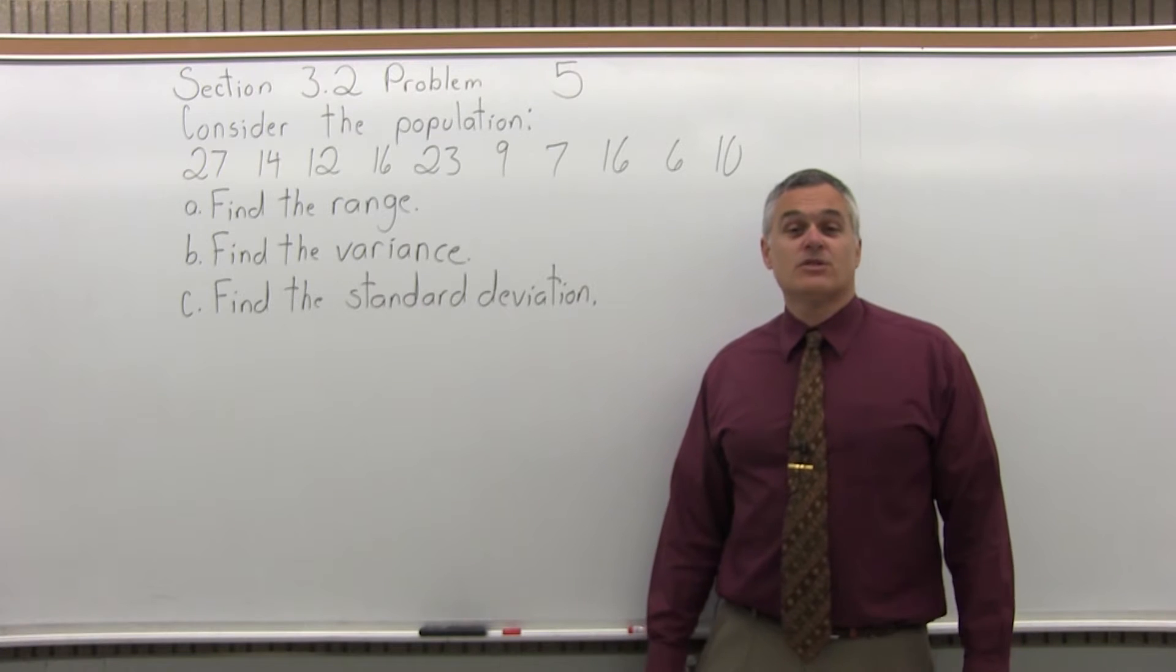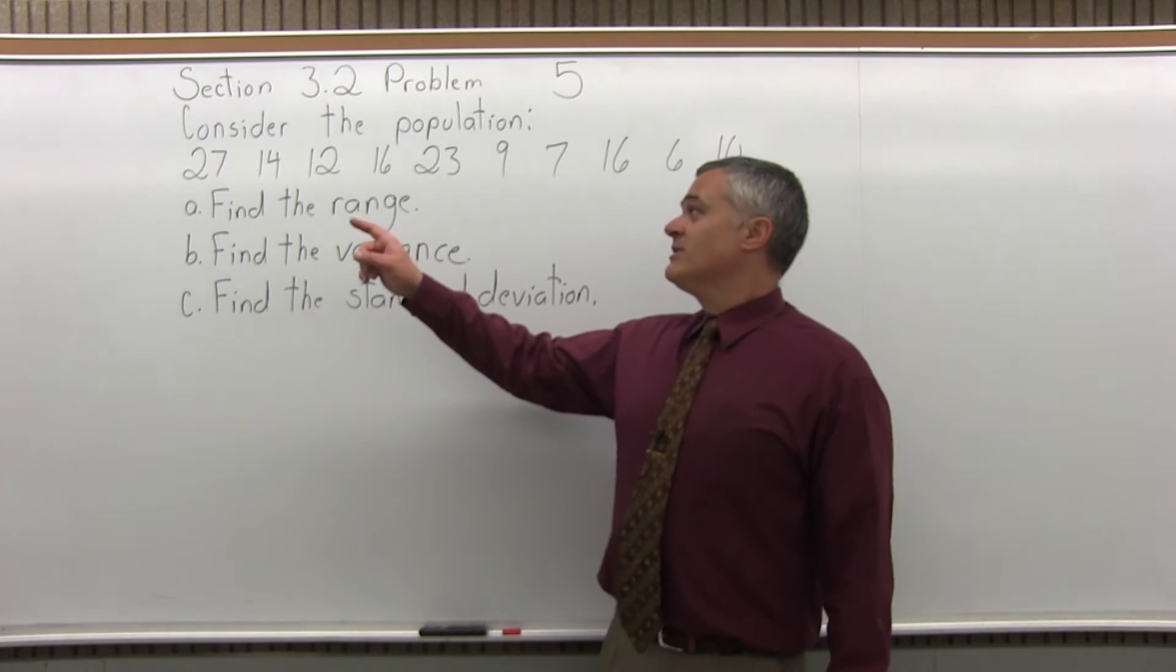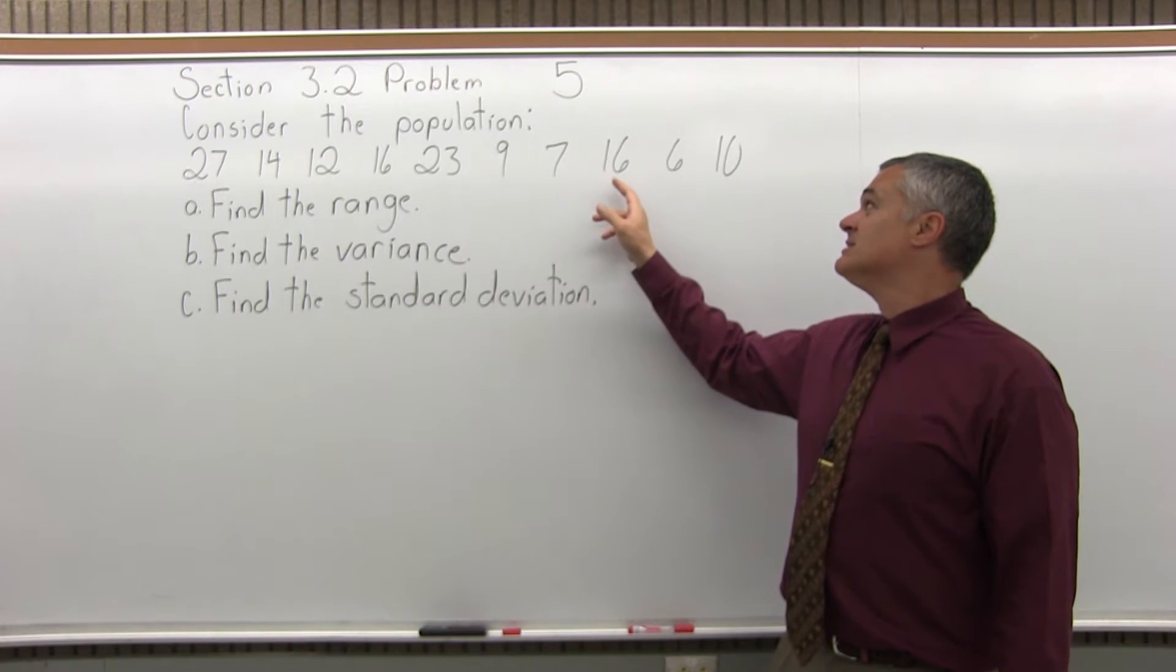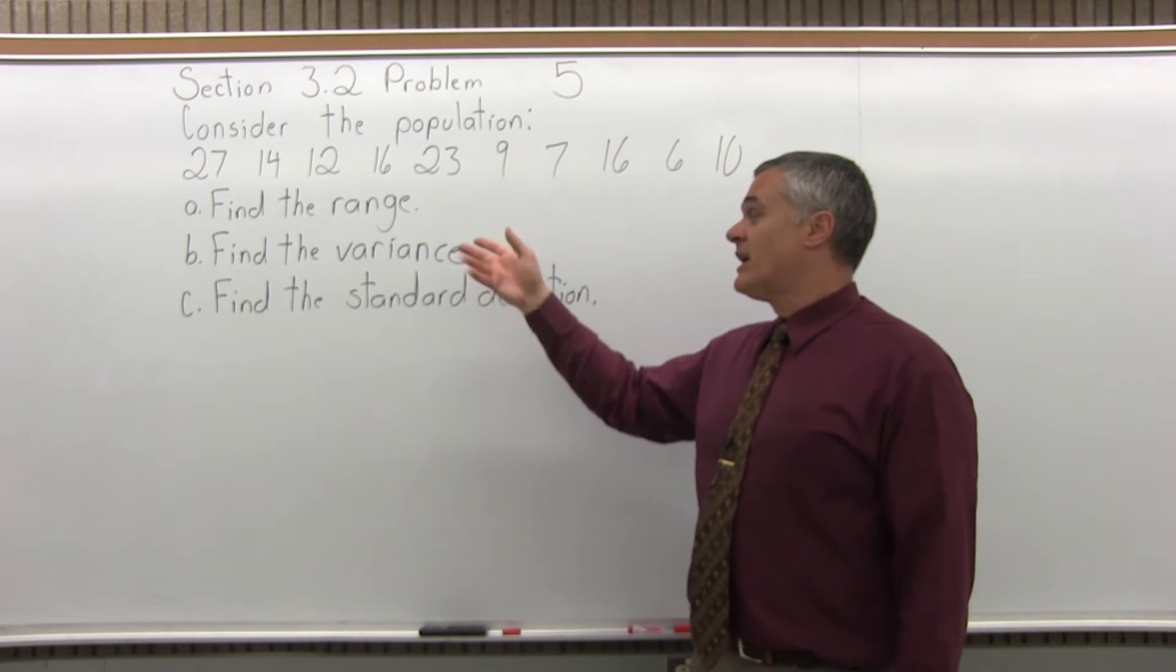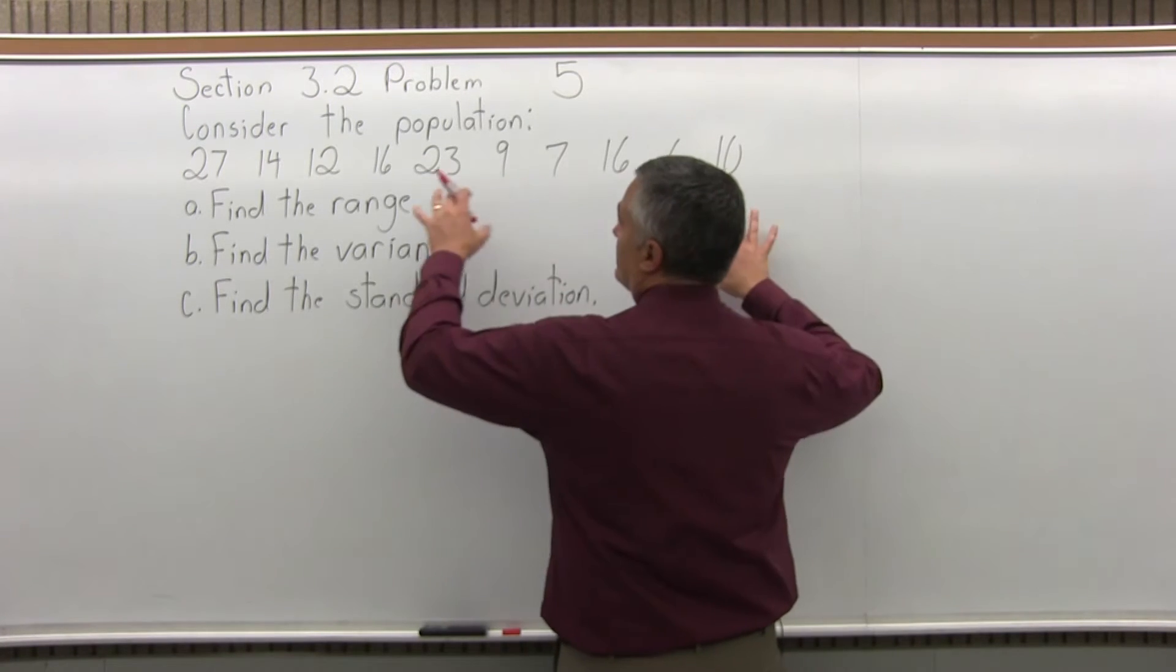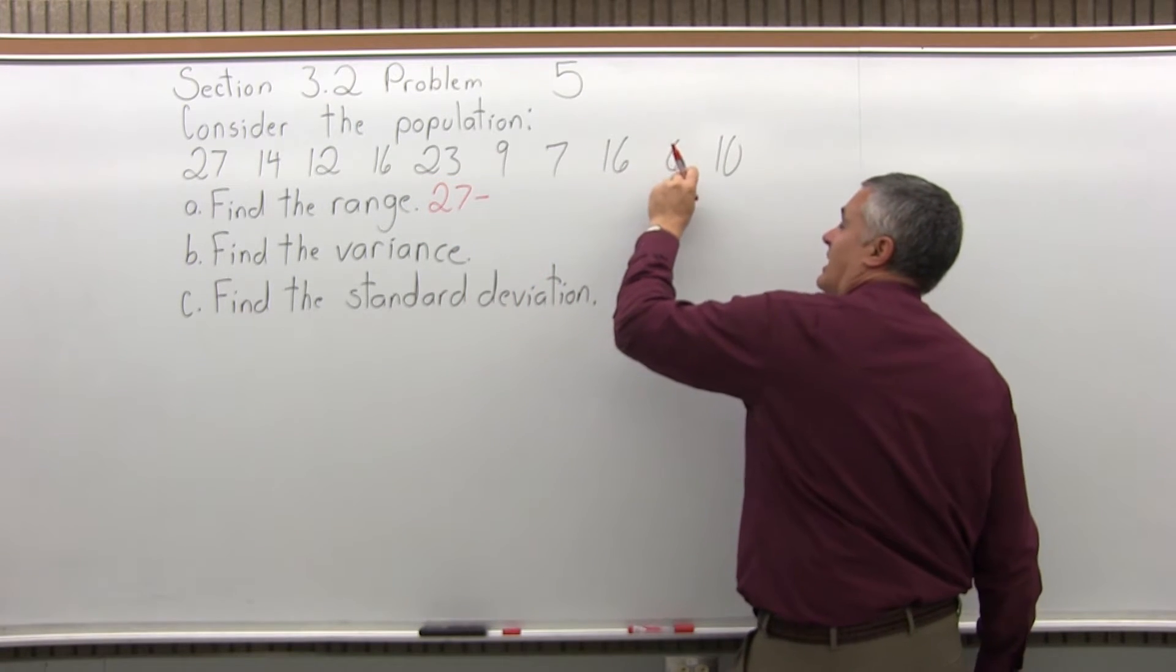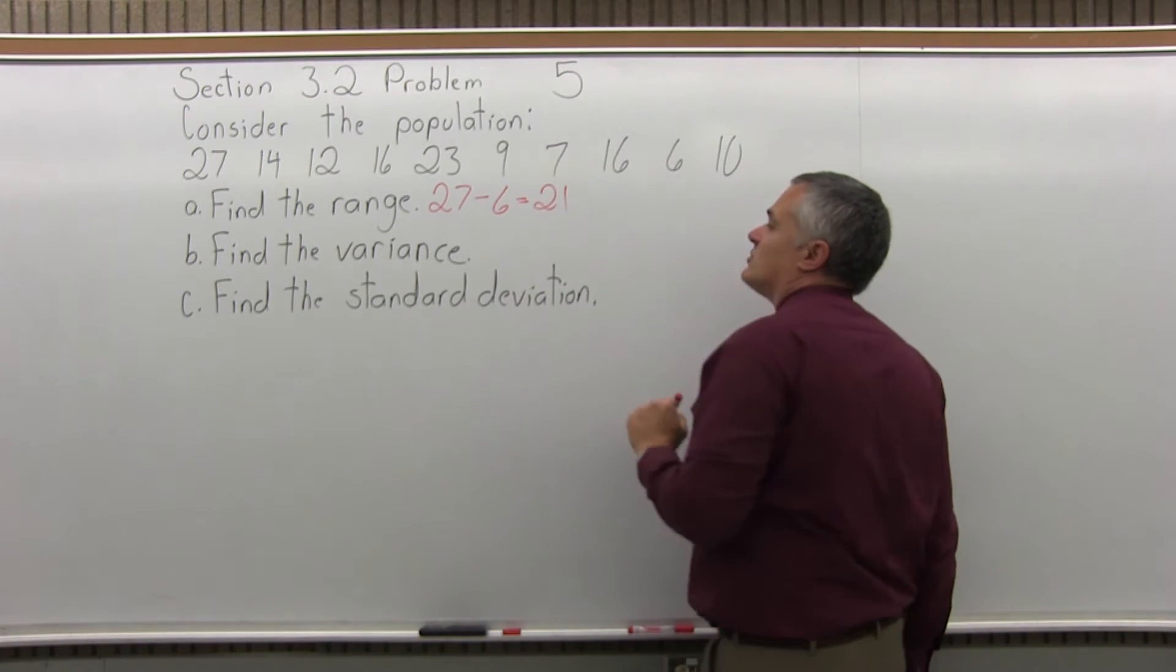This is Section 3.2, Problem 5. It says, consider the population 27, 14, 12, 16, 23, 9, 7, 16, 6, and 10. First, find the range. So the range is the biggest data value minus the smallest. The biggest data value we have is 27 minus the smallest data value, which is 6. If you do the subtraction, 27 minus 6 is 21.